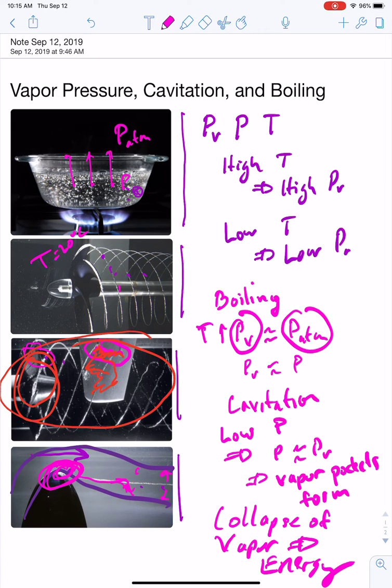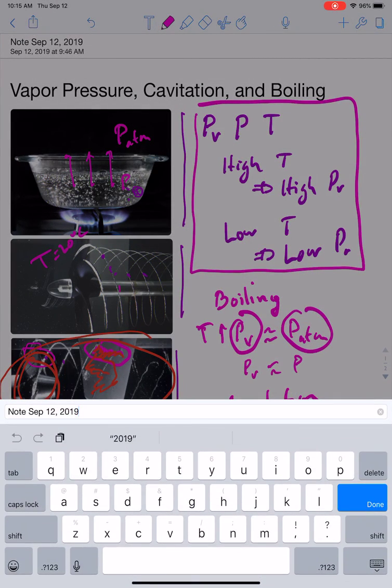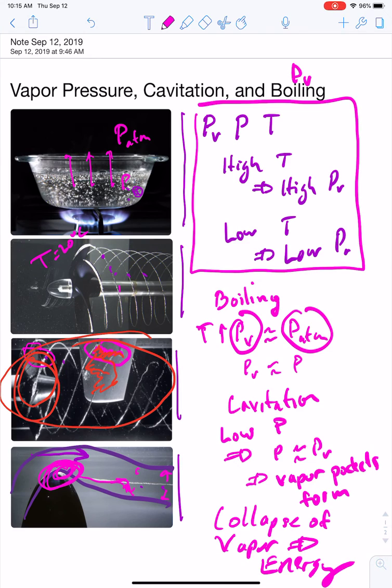And so just to recap, the key ideas here are up here. So understanding vapor pressure, cavitation, and boiling, vapor always is going to form when the vapor pressure and the fluid pressure are roughly the same.